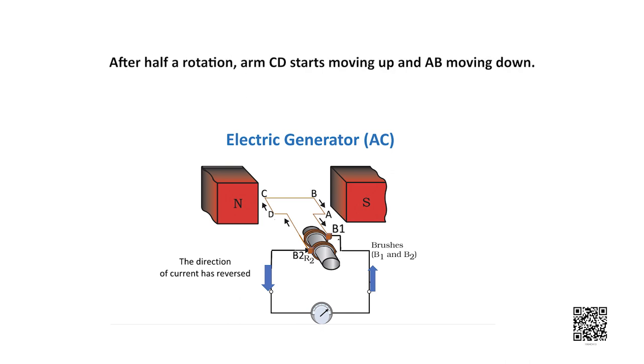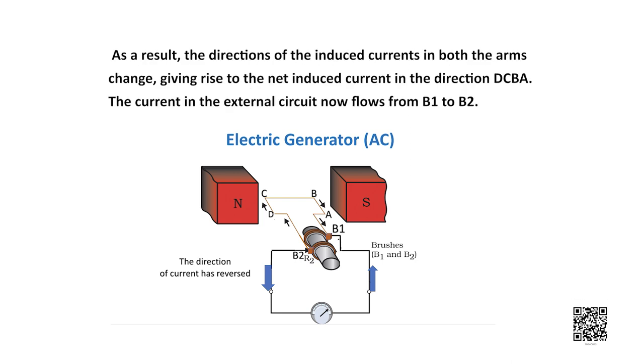This means that the current in the external circuit is from B2 to B1. After half rotation, CD starts moving up and AB moving down. As a result, the direction of induced currents in both the arms change giving rise to the net induced current in the direction DCBA. The current in the external circuit now flows from B1 to B2. Thus after every half rotation the polarity of the current in the respective arms change.